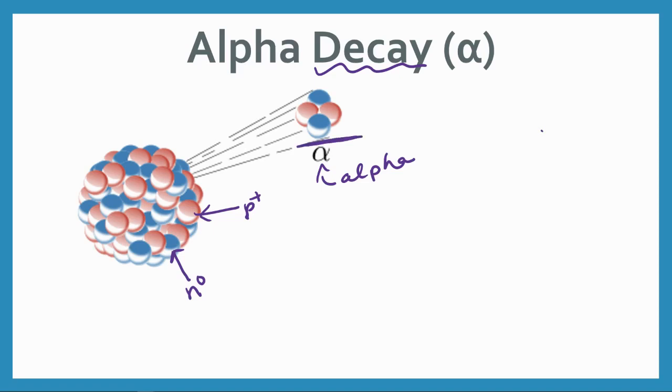If you look at the alpha particle, we've got two protons and two neutrons. And that's always what an alpha particle is. An alpha particle always contains two protons and two neutrons and it's being thrown out of that nucleus.